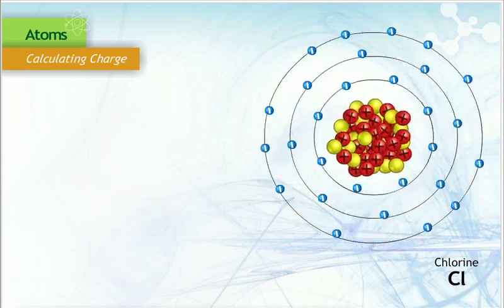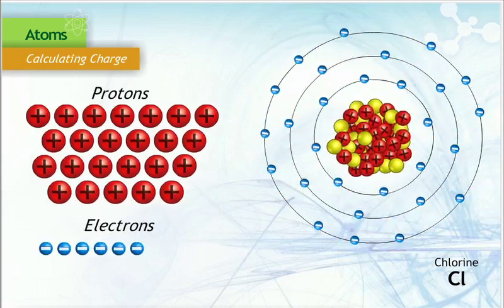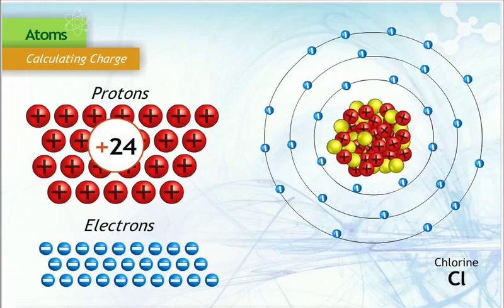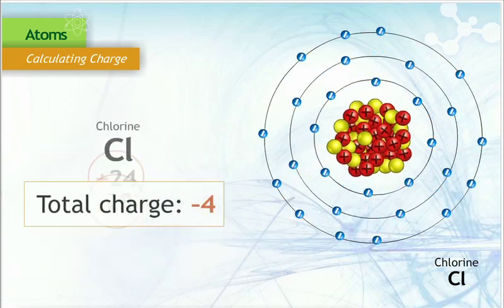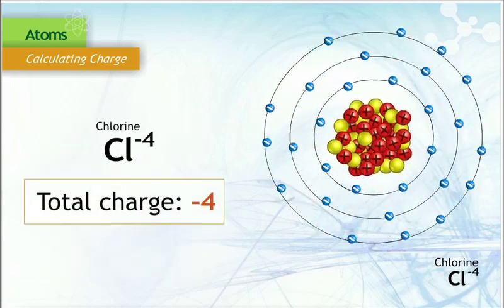Conversely, if an atom has 24 protons and 28 electrons, there are 24 positive charges and 28 negative charges. Adding the 2 results in a charge of negative 4.